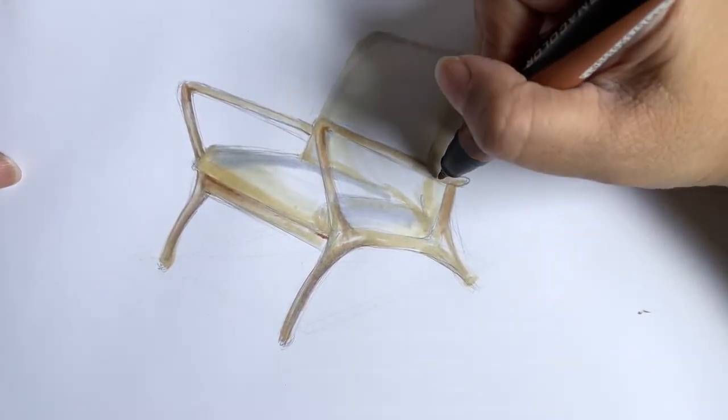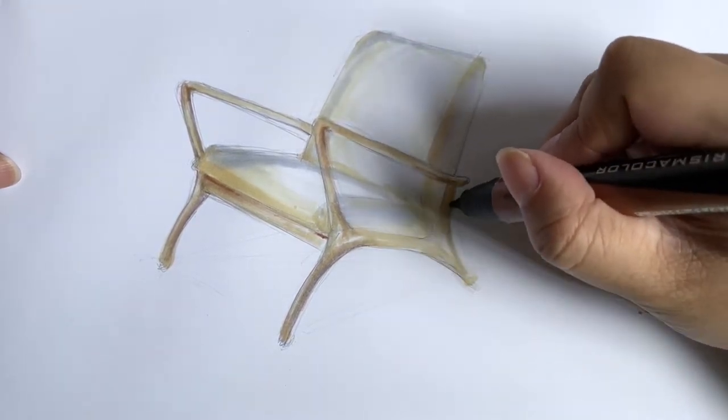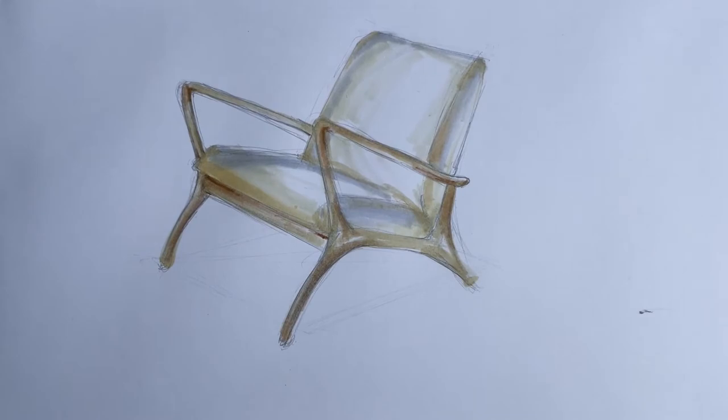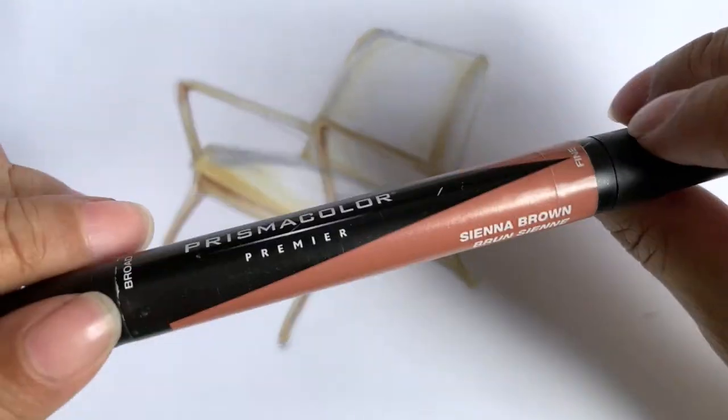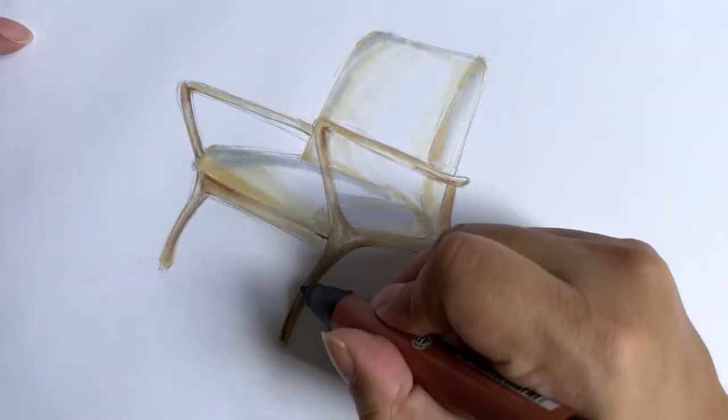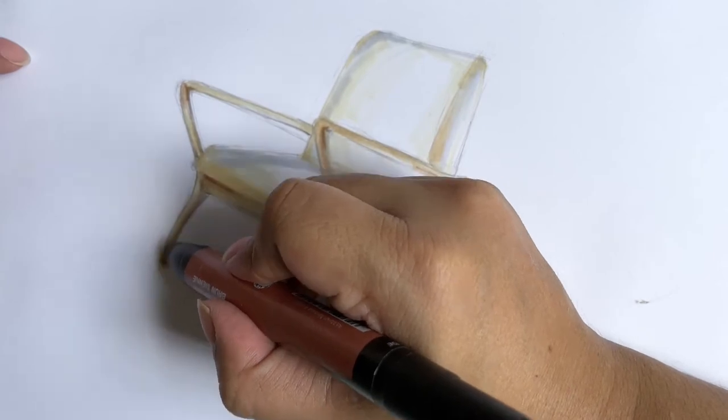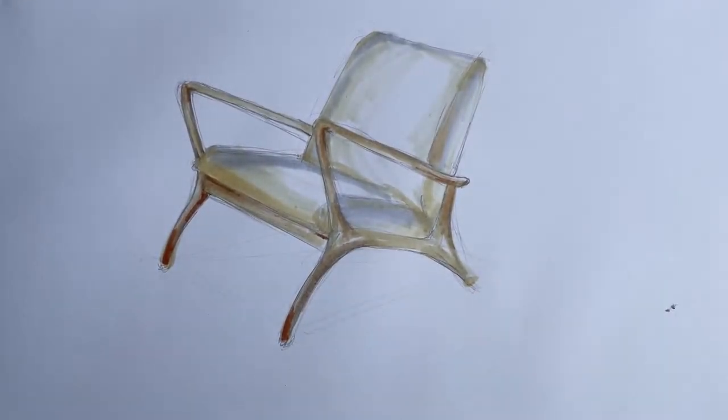Pull something else out. It doesn't work that well. Okay. So I'm going to throw that one away. Sienna Brown is another color. And this is a little more red than I want. I need to counteract that with something else.